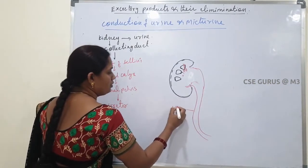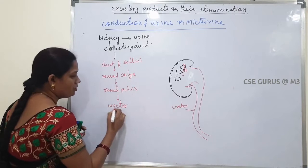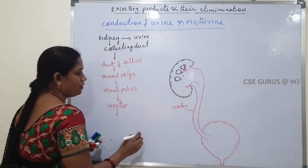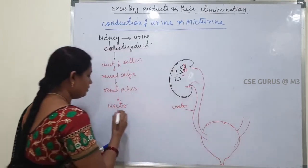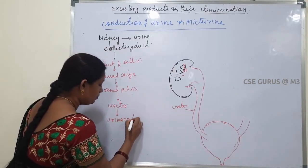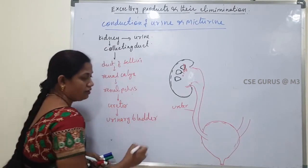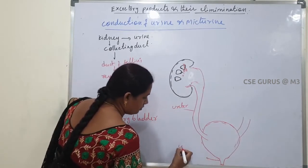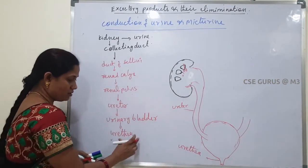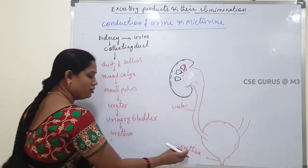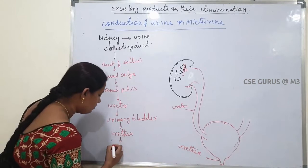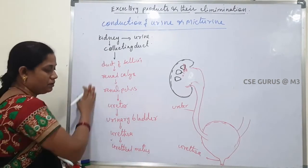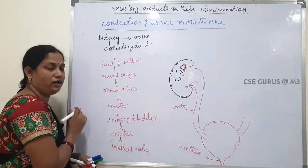The ureter opens into the urinary bladder. Two ureters open into the urinary bladder. Then the urinary bladder opens into the urethra, which opens to the outside through the urethral meatus. This is the pathway of urine passage, or conduction of urine.